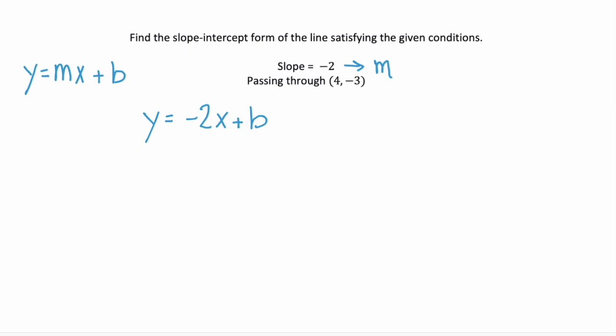Now we need to find b and the quickest way to find b is to use this given point. Since we know this point falls on our line, if we substitute that in for the x and y we can solve for b.